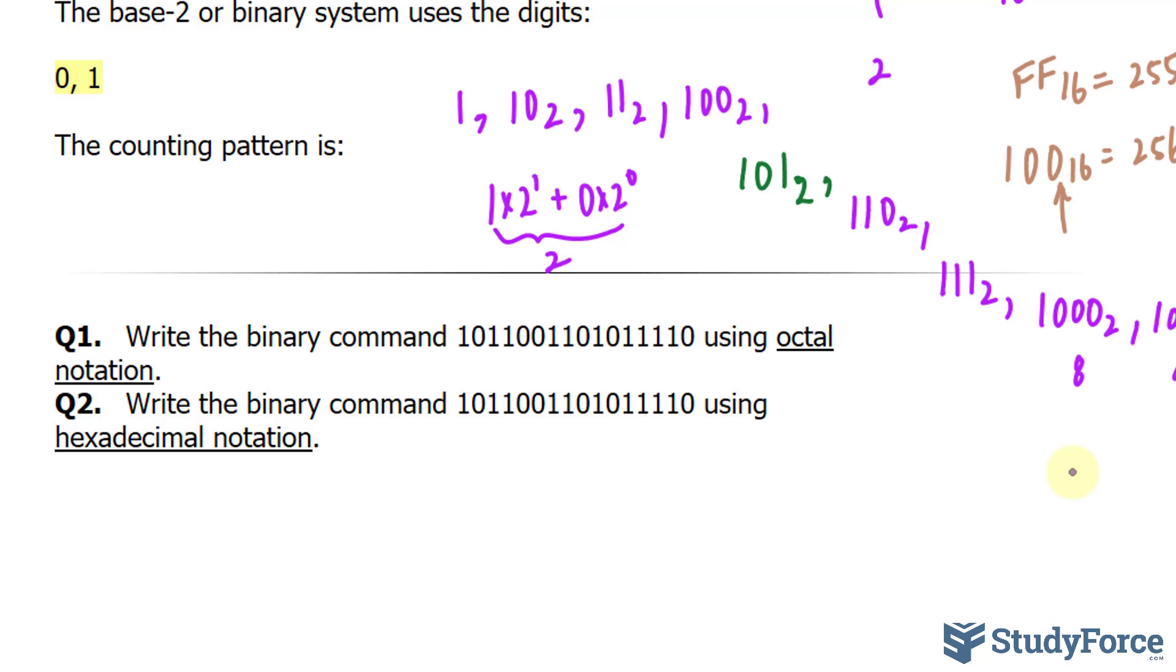Write the binary command, this, into octal notation. Octal notation is digits between 0 and 7. So the best way to do this is to break the binary command into bits of 3, just like this. Now we will convert each of these into decimal notation. And from there, interpret what the octal notation will be.